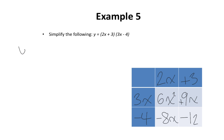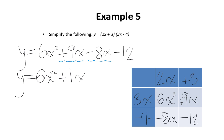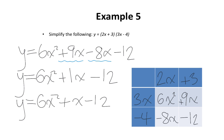I'm going to rewrite these terms: 6x squared, positive 9x, negative 8x, and minus 12. Positive 9x and negative 8x are like terms. Collecting them: positive 9x subtract 8x is positive 1x. The negative 12 stays the same. I don't like to write the coefficient 1, so I'll remove it in the final answer. Therefore, my final answer is y equals 6x squared plus x minus 12.